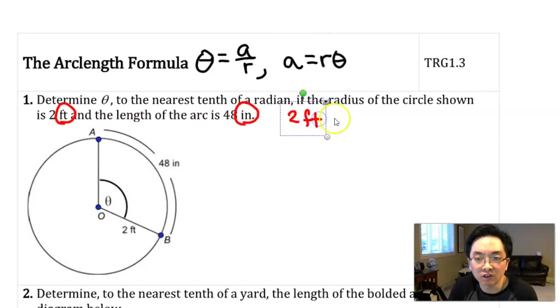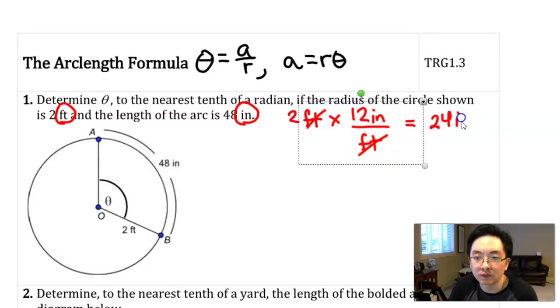One thing we could do is take 2 feet, and knowing the conversion, we know there's 12 inches per foot. So I can go 2 feet times 12 inches per foot. The feet cancel if we do some unit analysis and we end up with 24 inches.